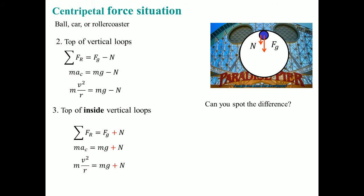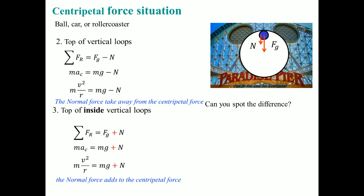What you want to do here is spot the difference. On the outside top, the normal force takes away from the centripetal force. But when the object is on the inside of the top of the vertical loop, the normal force adds to the centripetal force. Be very careful of these two different situations.